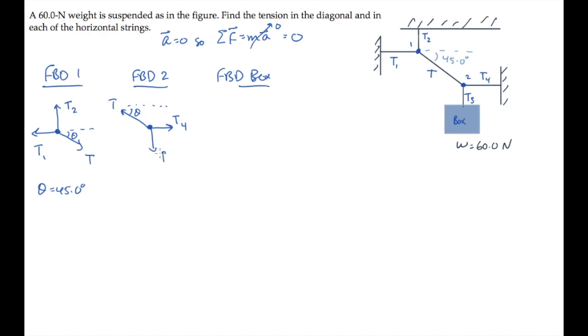On the box, we see there are two forces. There's its weight, straight down as always, and there's tension T3, straight up along the vertical string.